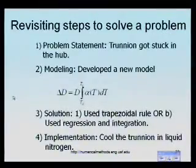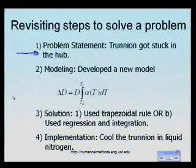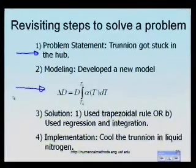Let me review the four steps which we talked about in solving an engineering problem. So we had a problem. What was the problem? The trunnion got stuck in the hub. We didn't want that problem to take place again, so we developed a new model. We know that, even when we develop a mathematical model, we have to understand that we are developing a good, accurate model.